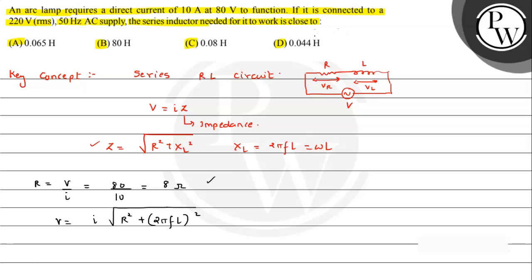From here we can see V is 220 given, right? That is the RMS value. And I given is 10 ampere.